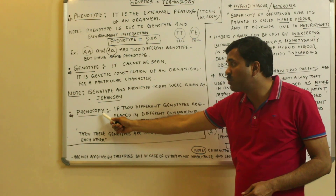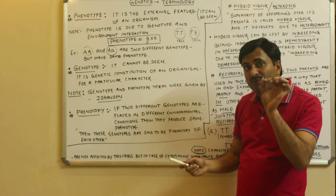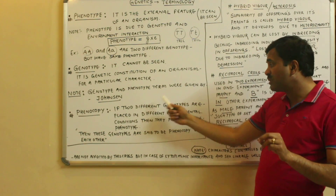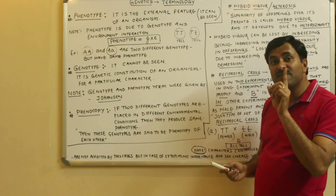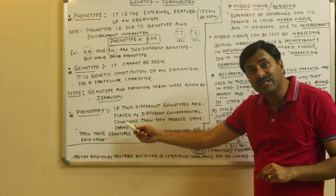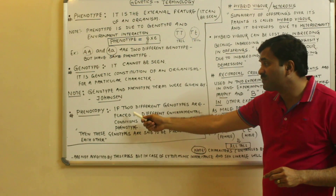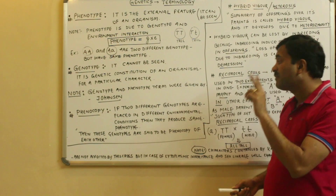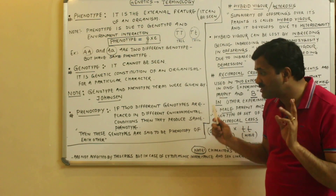The next term is phenocopy. Many students know about phenotype and genotype but many are not familiar with phenocopy. Always remember: if two different genotypes are placed in two different environmental conditions and they produce the same phenotype, then those genotypes are said to be phenocopies of one another.